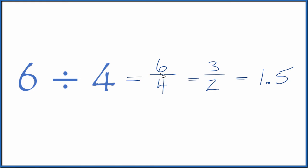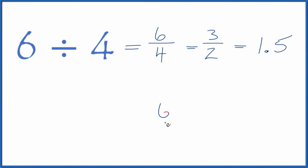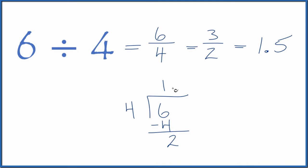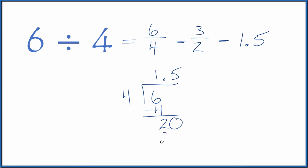We could also divide this longhand. We could say 6 and see how many times 4 goes into 6 — 4 goes in there once. 1 times 4 is 4. We subtract and we get 2. If we put a decimal point up here, we could call this 20. Then 5 times 4 is 20. Subtract — remainder is 0. And we got what we had before: 6 divided by 4 is 1.5.